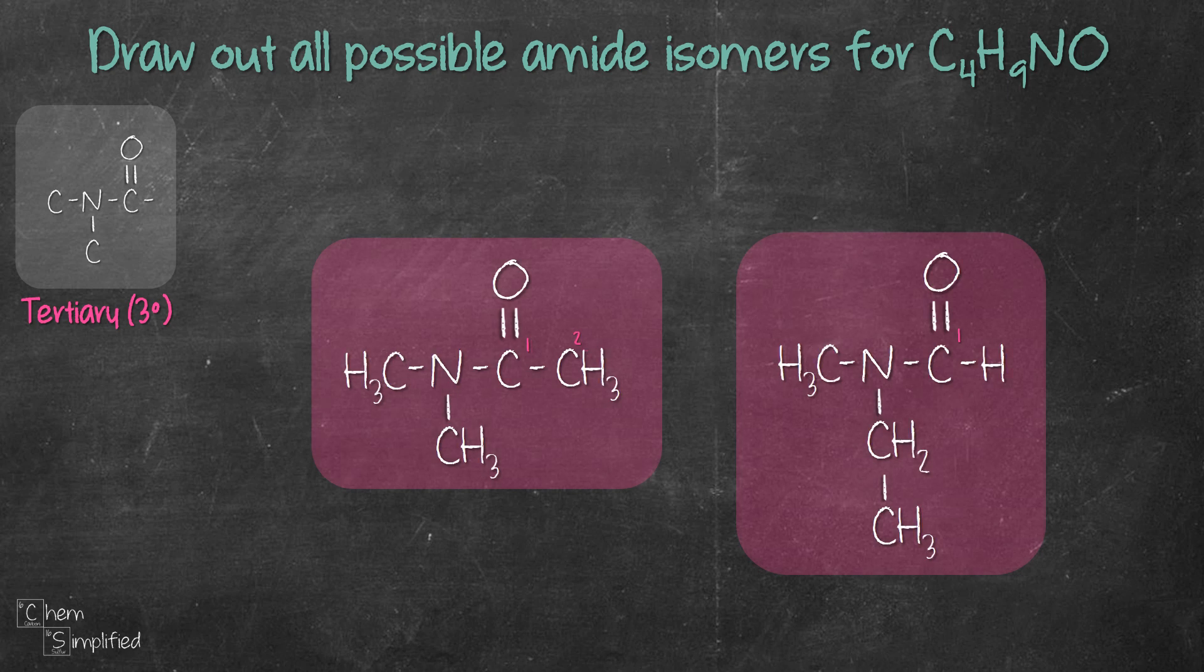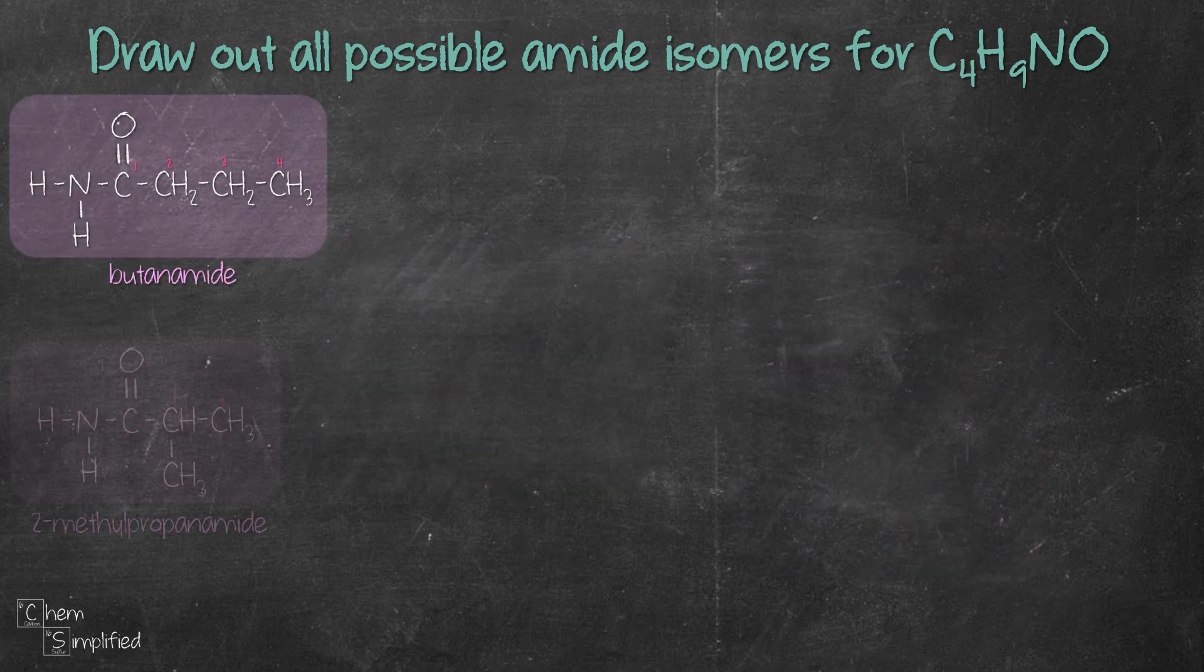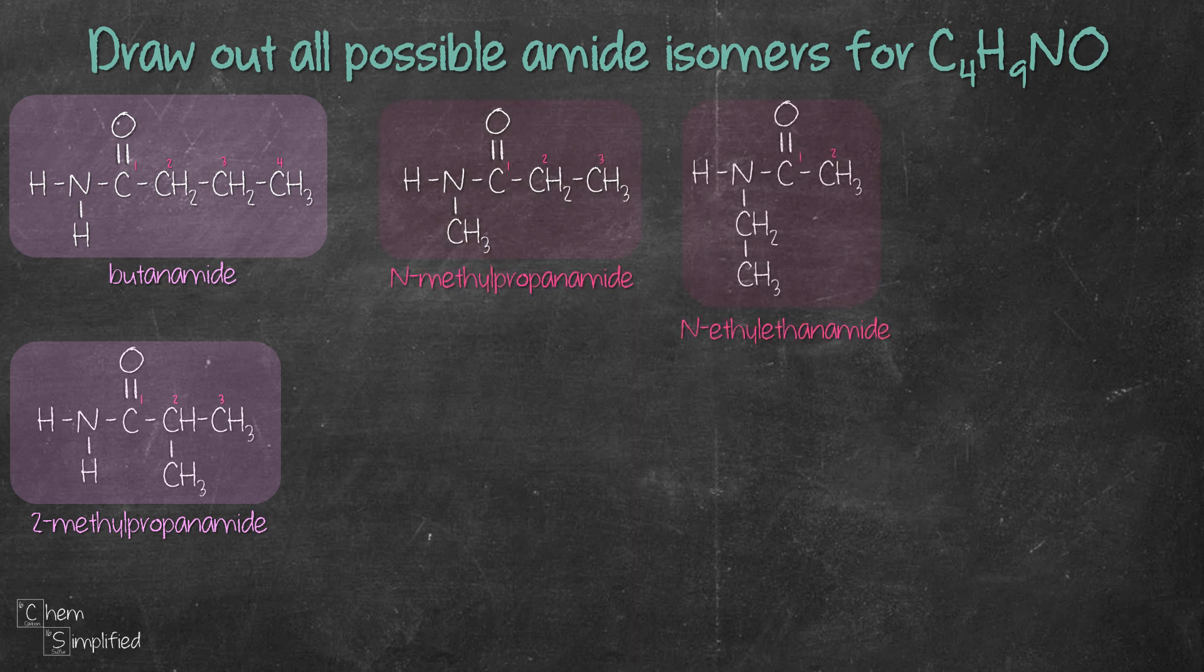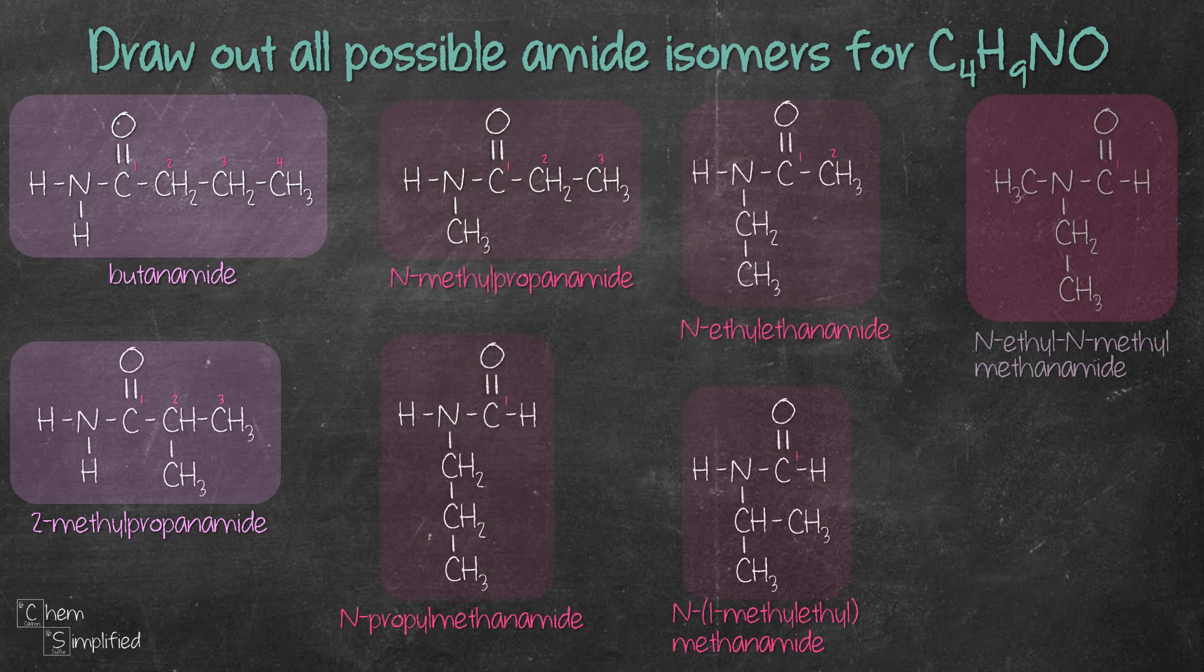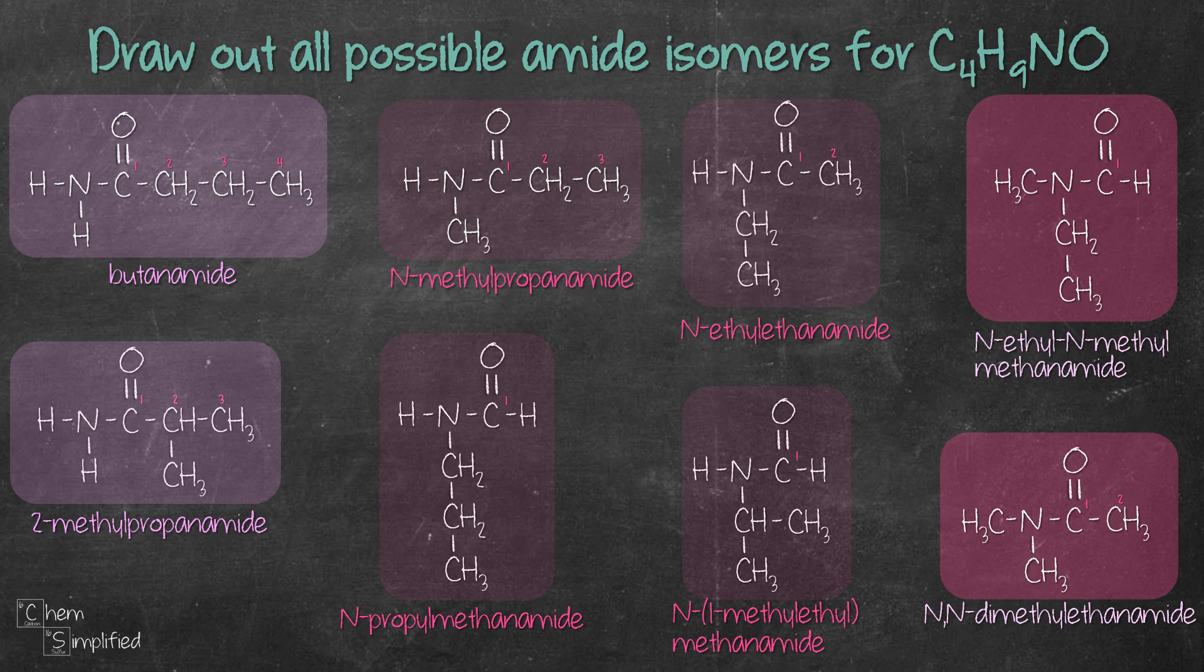When we fill out the structure with the remaining hydrogen, this is what we'll get. Here are all the eight isomers we have drawn for primary, secondary and tertiary amides, along with their IUPAC nomenclatures. Did you get the same structures?